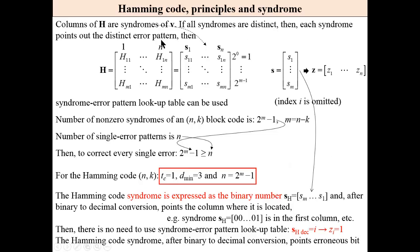From previous screencast we know that columns of matrix H, parity check matrix, are syndromes of the received word V. If all syndromes are distinct, then each syndrome points out the distinct error pattern, and then syndrome error pattern lookup table can be constructed and used to detect error pattern.